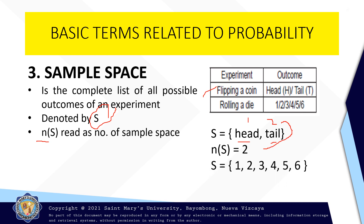We have the experiment rolling a die. The sample space on this given experiment is one, two, three, four, five, six. And the number of sample space on this experiment is six.